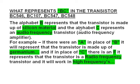The alphabet 'B' represents that the transistor is made up of silicon material, and the alphabet 'C' represents that it is an audio frequency transistor — an audio frequency amplifier. If 'B' is replaced with 'A', it represents that the transistor is made up of Germanium. If 'C' is replaced with 'F', it represents that the transistor is a radio frequency transistor and it will work in high frequency.